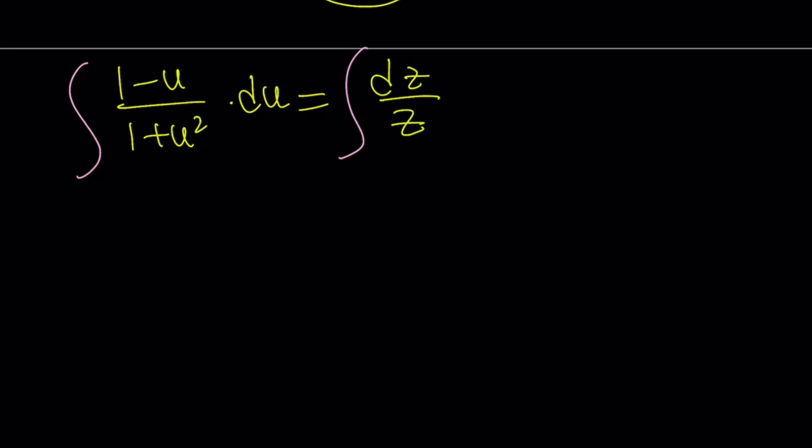And now, we're going to integrate the left-hand side. Right-hand side is easy. It's just ln absolute value of z. How do you integrate the left-hand side? Easy. We can just separate them. And then, it'll be easy to integrate.